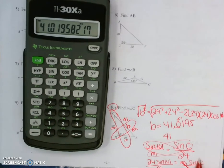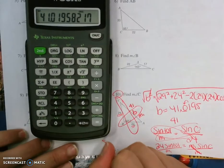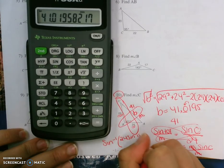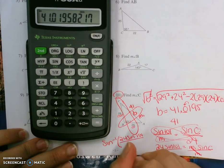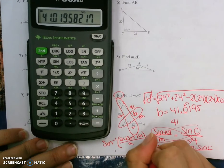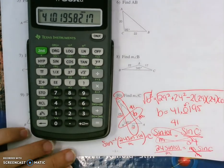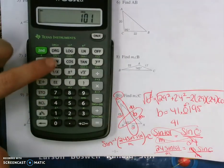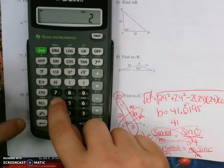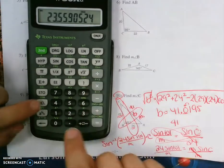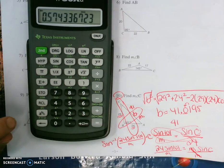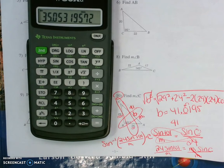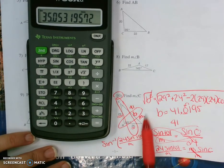24 times sine 101 equals the memory one times sine C. Divide by memory one on both sides, and you have sine C equals all of that. Anytime you're solving for an unknown angle, you use the inverse. So the inverse sine of 24 sine 101 all over memory one equals our angle C.